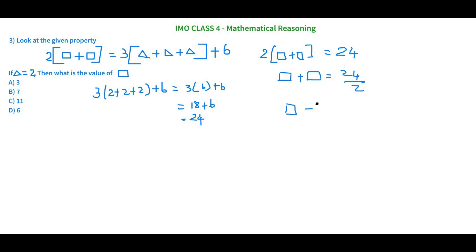So rectangle plus rectangle equals 24 divided by 2, which gives us rectangle plus rectangle equals 12. The two rectangles together make 12, so one rectangle equals 6. Our correct answer is 6.